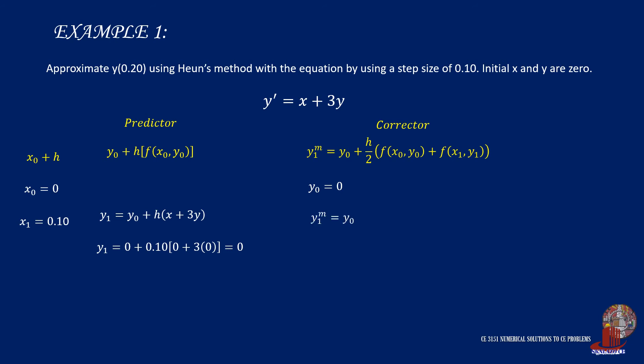Take note that this is the predictor which needs to be corrected, so the modified y1 will be computed with the formula, giving y0 as 0, then half of step size will be 0.1 over 2, and then the function of the initial point as 0 plus 3 times 0, and the function of the second point as 0.1 for x1 plus 3 times y1, which is 0, resulting to 0.005.